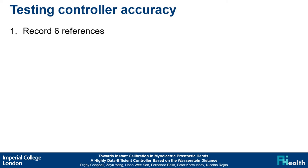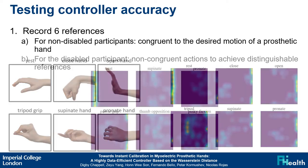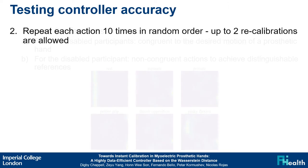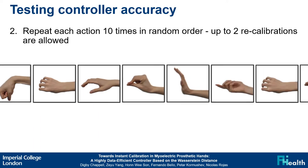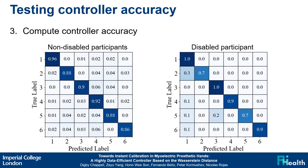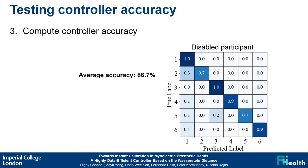To test the accuracy of the controller during use, we record six references. For non-disabled participants, these were recorded congruent to the desired motion of a prosthetic hand, whereas for the disabled participant, non-congruent actions were used to achieve distinguishable references. Participants repeated each action ten times in a random order, and up to two recalibrations of the controller were allowed. Non-disabled participants achieved an average accuracy of 89.9%, and tripod grip caused the most false positive results. The disabled participant achieved an average accuracy of 86.7%, and the rest action caused the most false positive results due to muscle weakness.